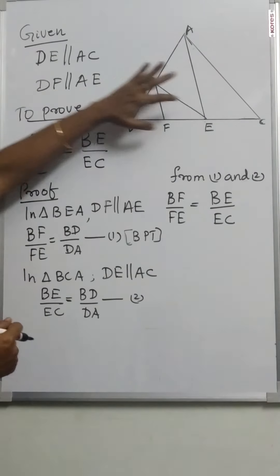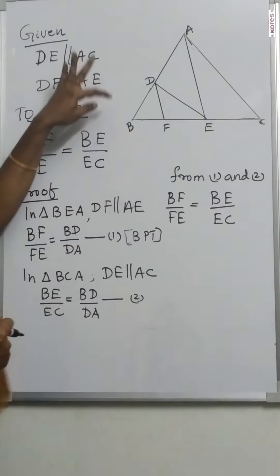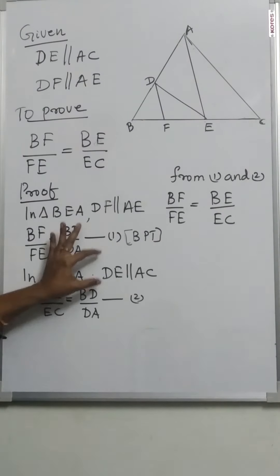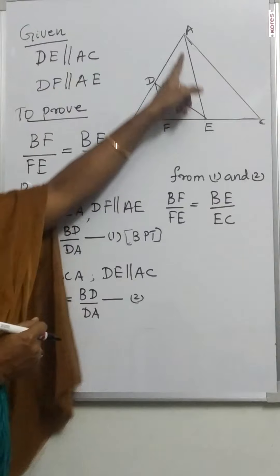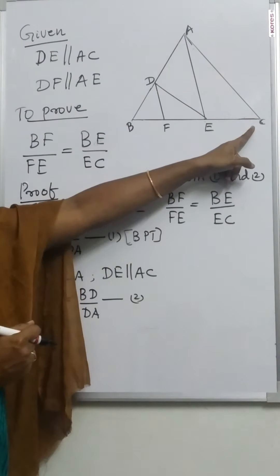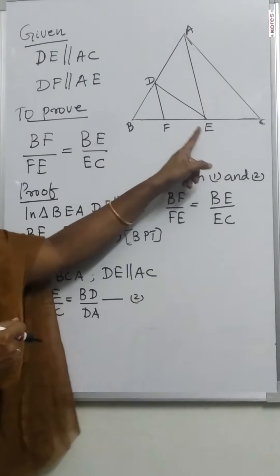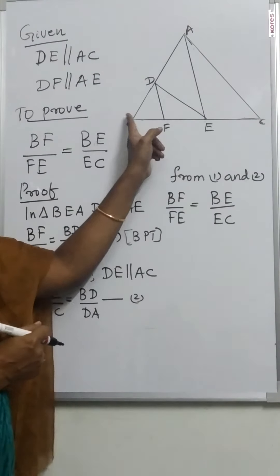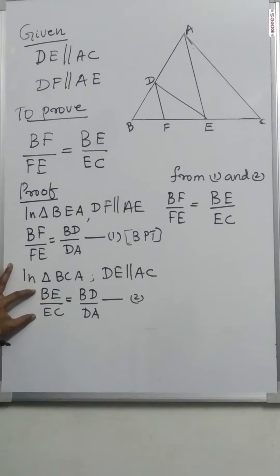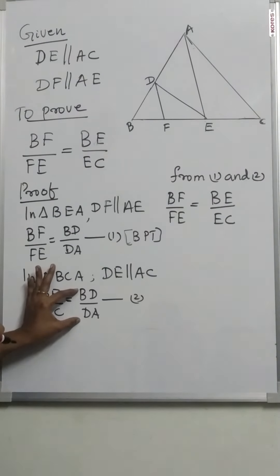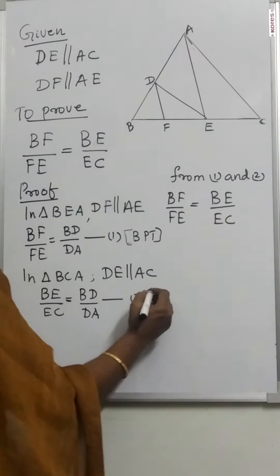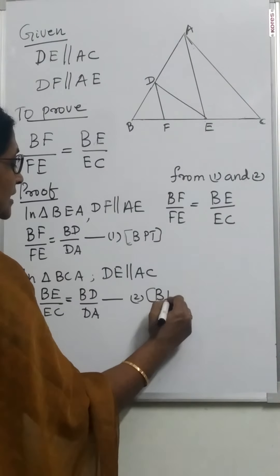In triangle BCA, DE is parallel to AC. Therefore, BE by EC is equal to BD by DA. That is, BE by EC is equal to BD by DA — also by the Basic Proportionality Theorem. Take this as equation number 2.